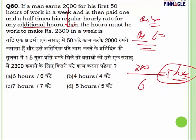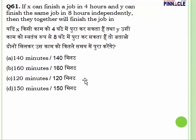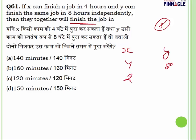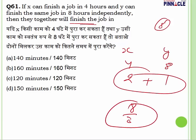Question number 61: X can finish a job in 4 hours; Y can finish the job in 8 hours. Working together, how long do they take? LCM is 8 units total work. X's efficiency: 8/4 equals 2 units per hour; Y's efficiency: 8/8 equals 1 unit per hour. Together: 3 units per hour. Time to complete 8 units: 8/3 hours, which equals 2 hours 40 minutes, or 160 minutes.